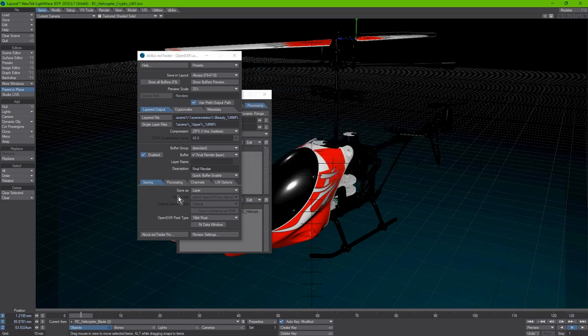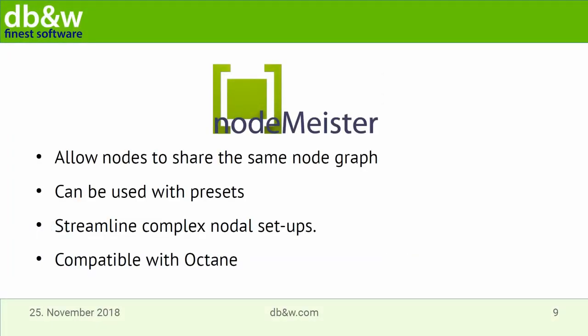NodeMeister is essentially an extension of the compound nodes that already exist in LightWave. It allows you to have one node graph that's your own, shared across other node graphs using a special node, and used with presets. The main idea is to make complex nodal setups easier to create and enable reuse of nodal setups in different node graphs simultaneously. We also made sure from the first patch to make it compatible with Octane, which many people asked for.